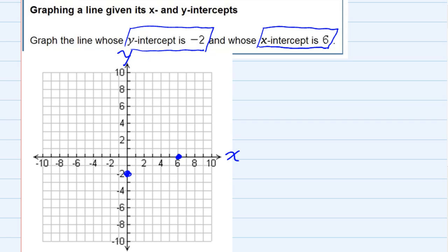So since those are the two places where they cross the axes, once at negative 2 here on the y-axis and once at 6 on the x-axis, we just need to connect those dots. So connecting the dots gives us our line, that's the line giving its x and y intercepts.